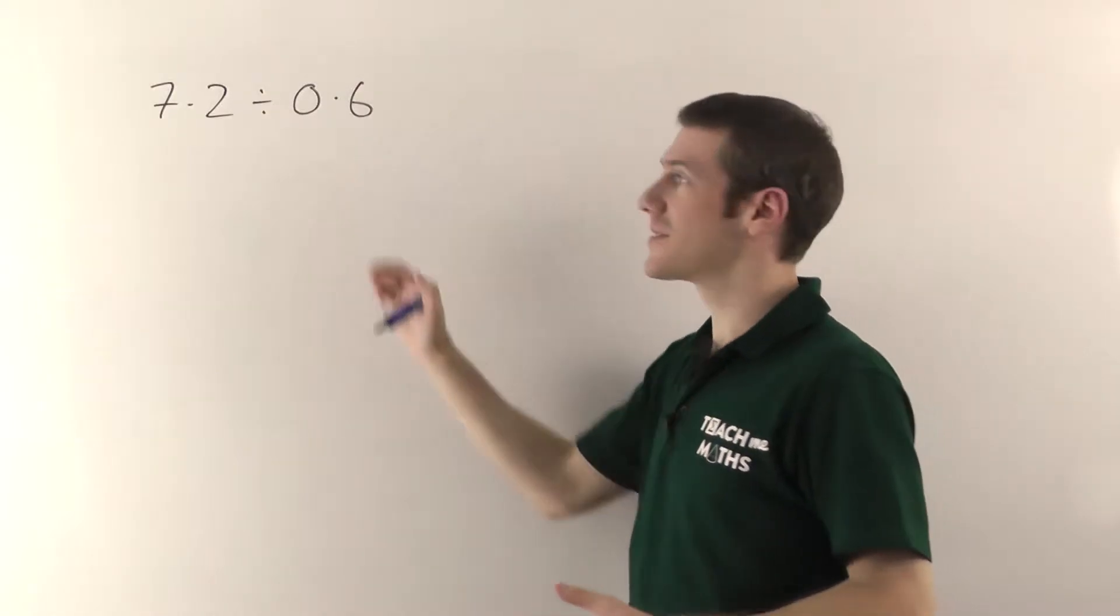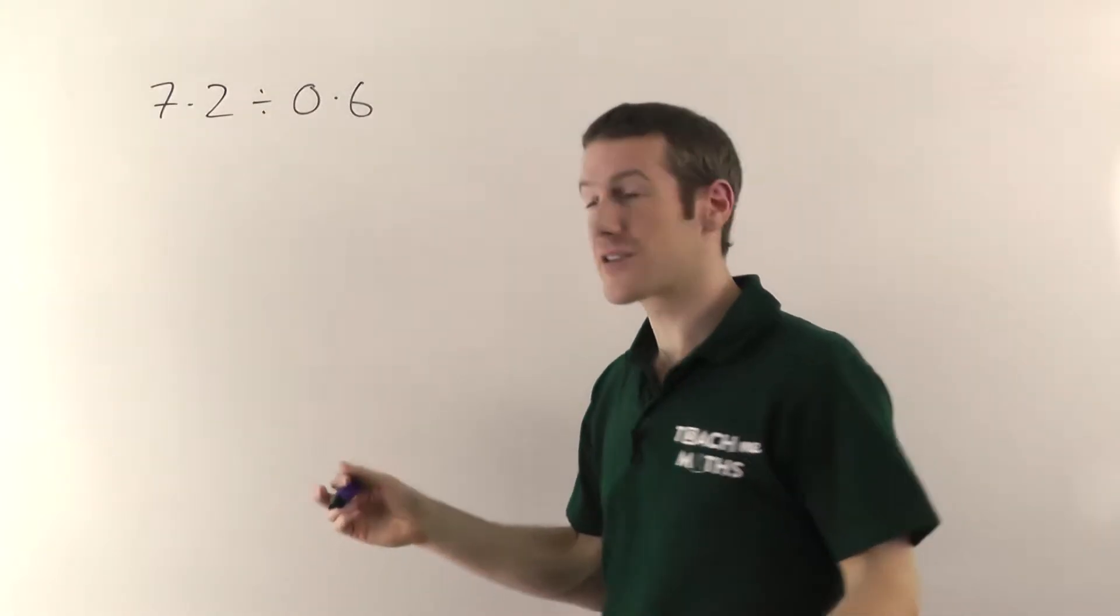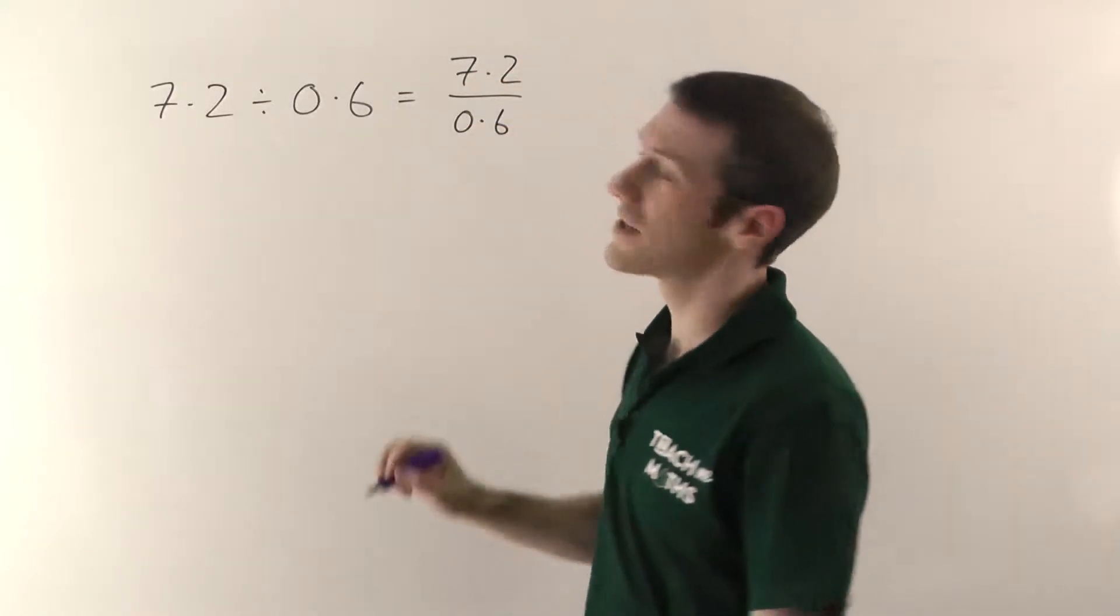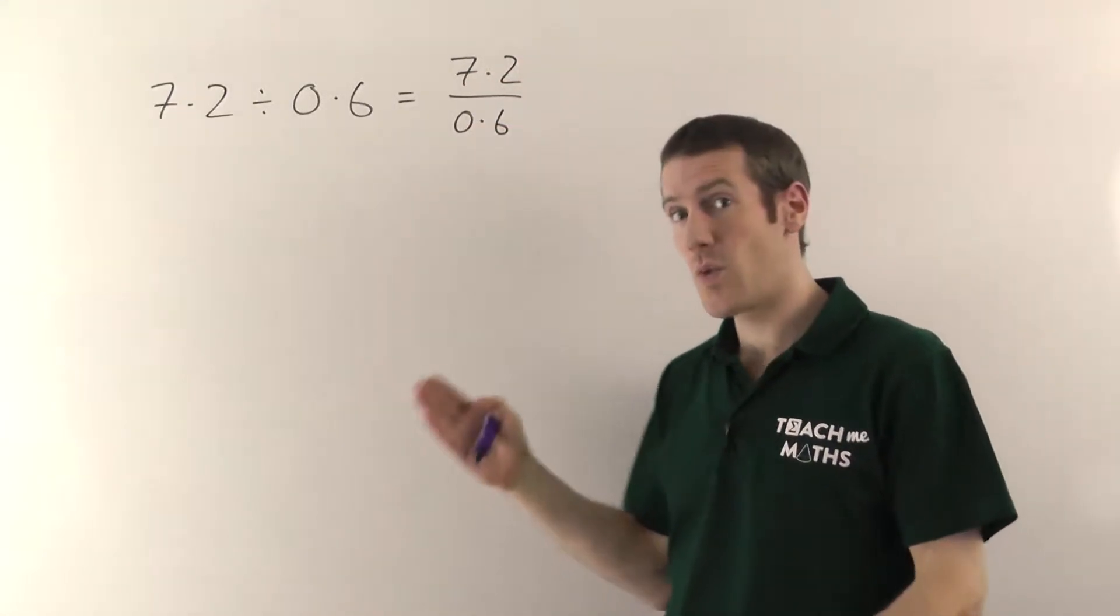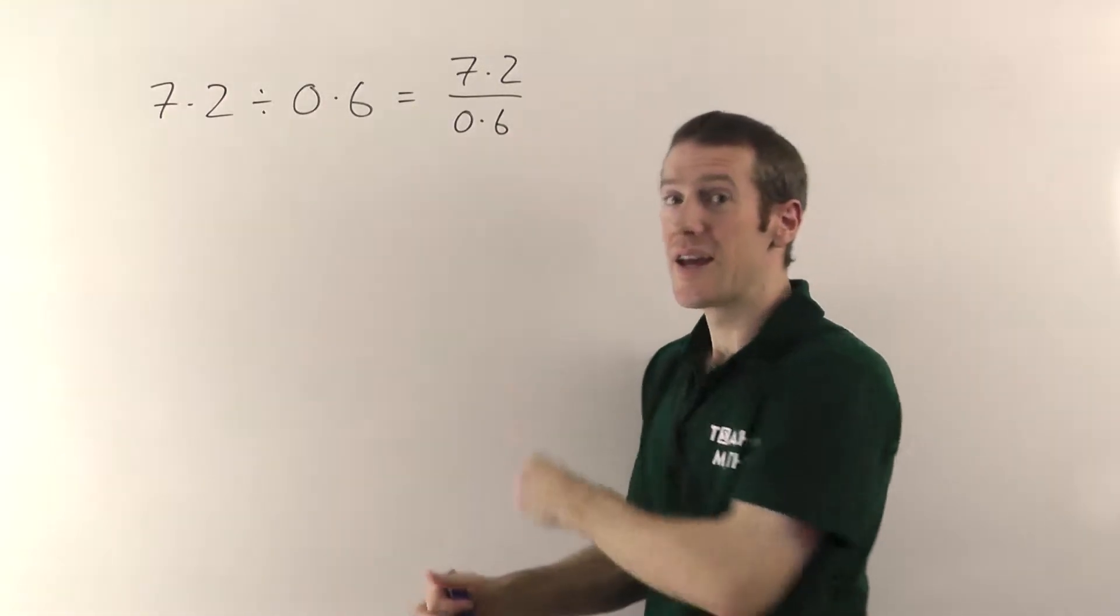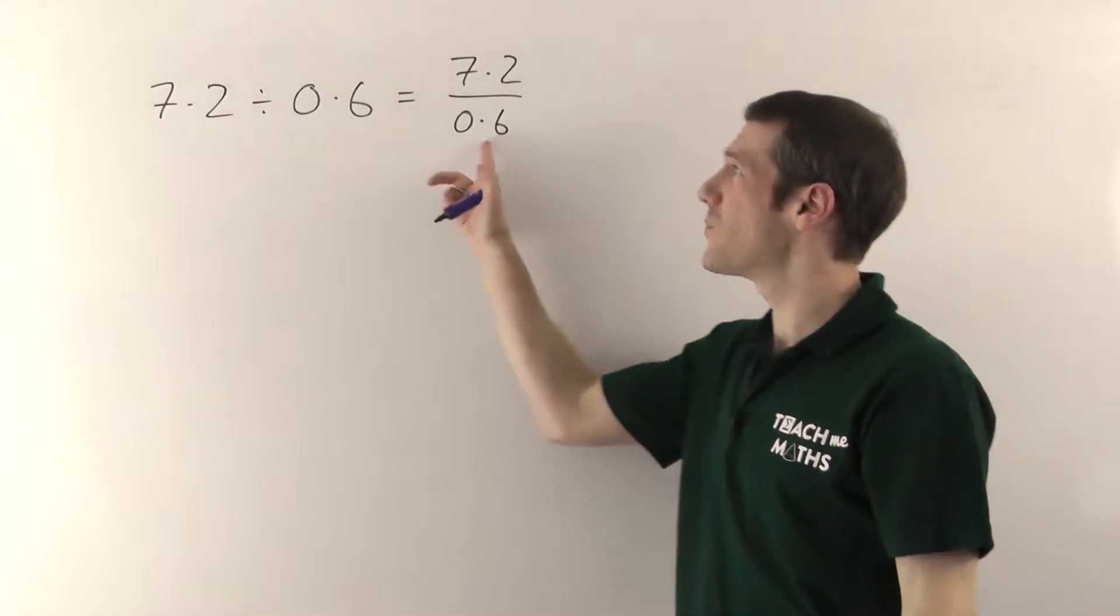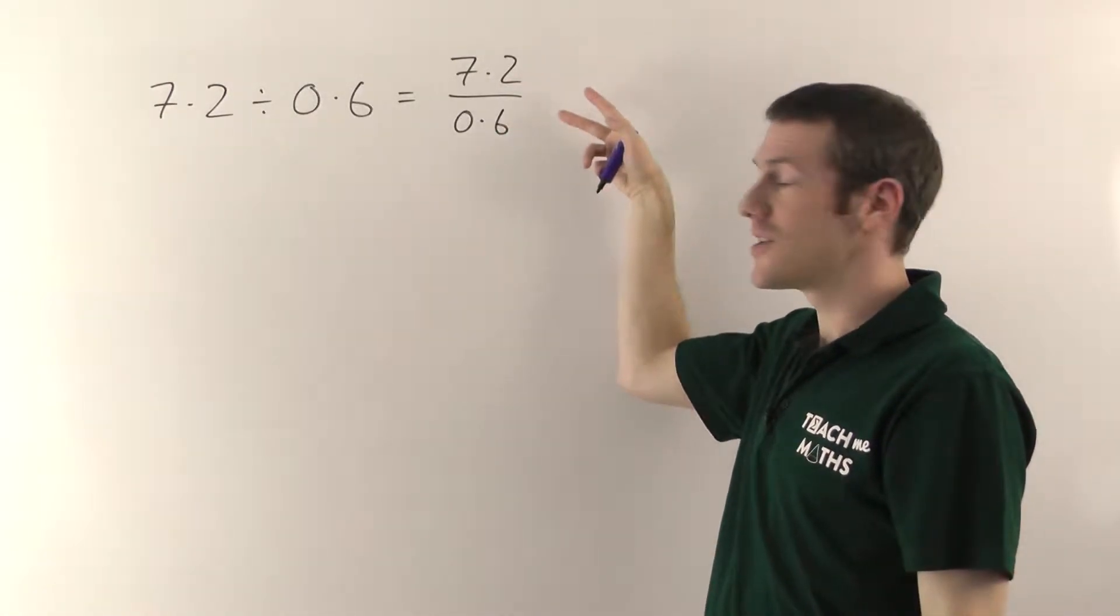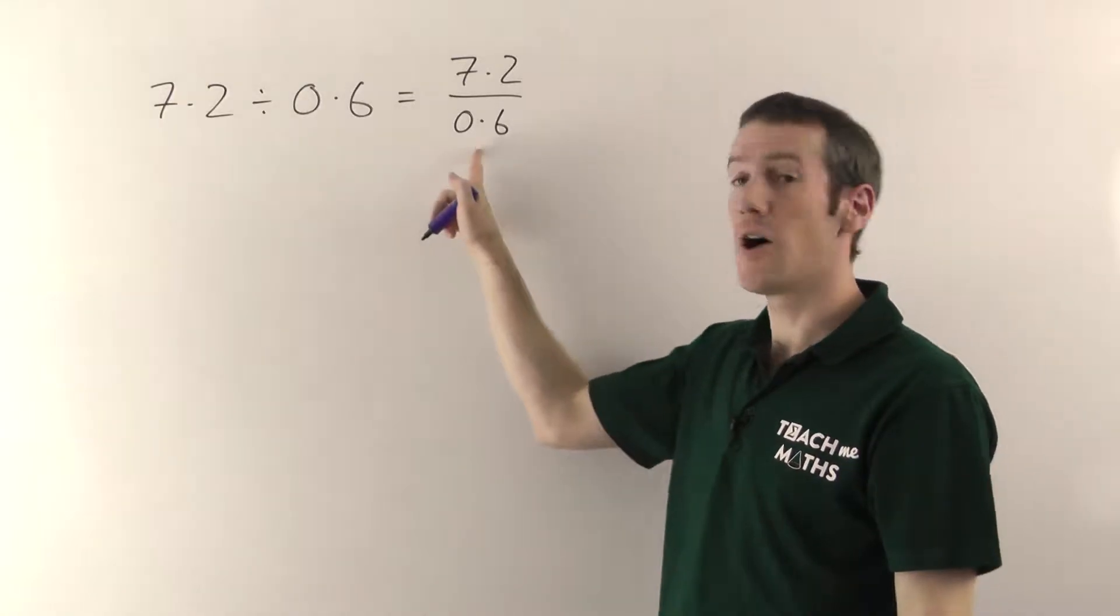So to divide two decimals, you want to write it as a fraction. So 7.2 on the top, 0.6 on the bottom. Now the method here, the way you deal with this, is you just have to make the number on the bottom into a whole number. You really don't want to be dividing by a decimal number. So we're going to multiply this fraction up and make it bigger and bigger until you get a whole number on the bottom.